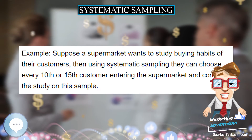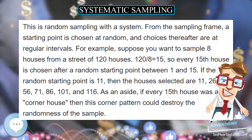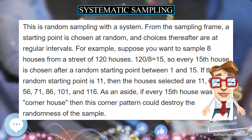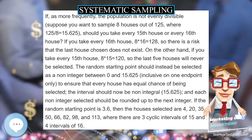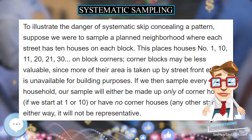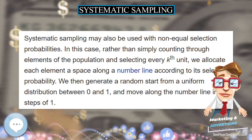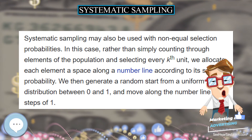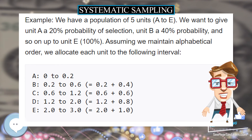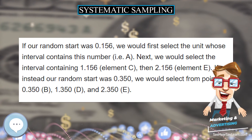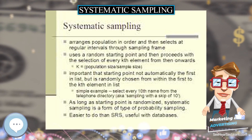Assuming we maintain alphabetical order, we allocate each unit to the following interval. If our random start was 0.156, we would first select the unit whose interval contains this number, i.e., A. Next, we would select the interval containing 1.156, which is element C, then 2.156, element E. If instead our random start was 0.350, we would select from 0.350 — B — then 1.350 — D — and 2.350 — E.